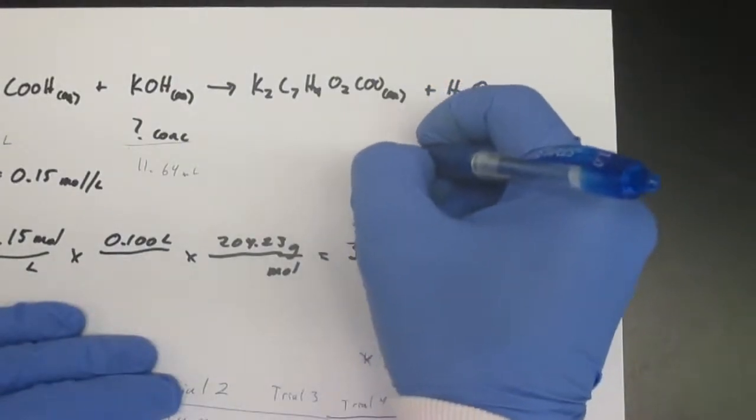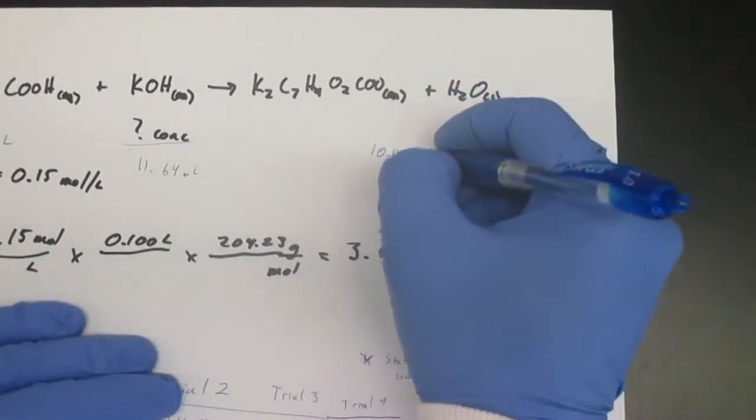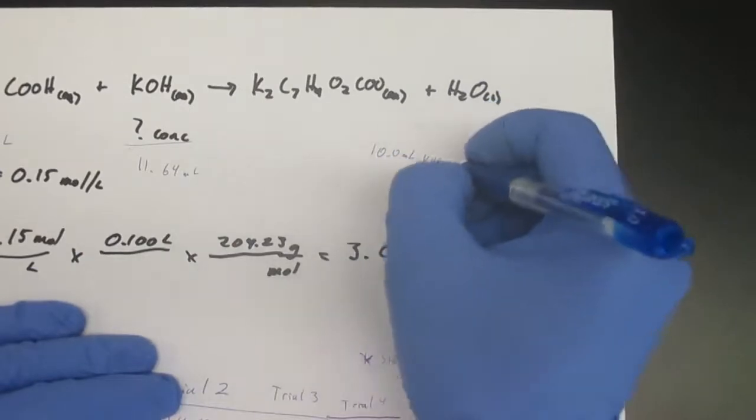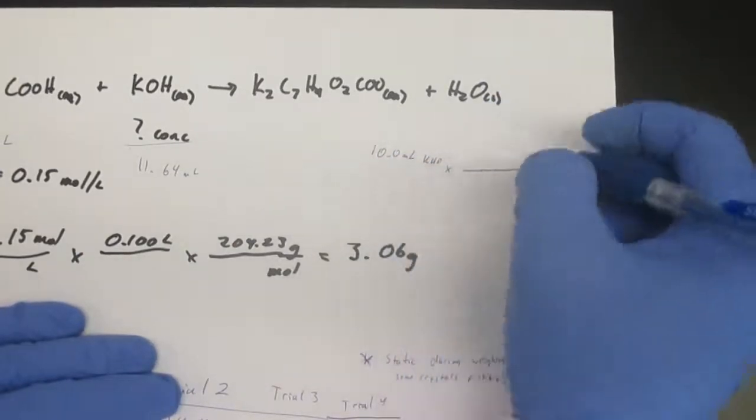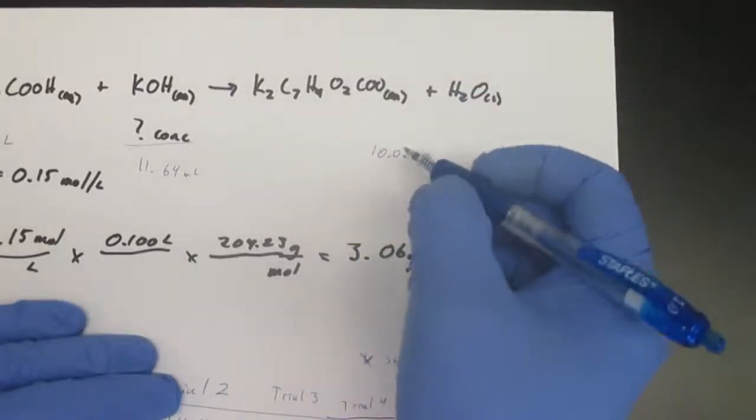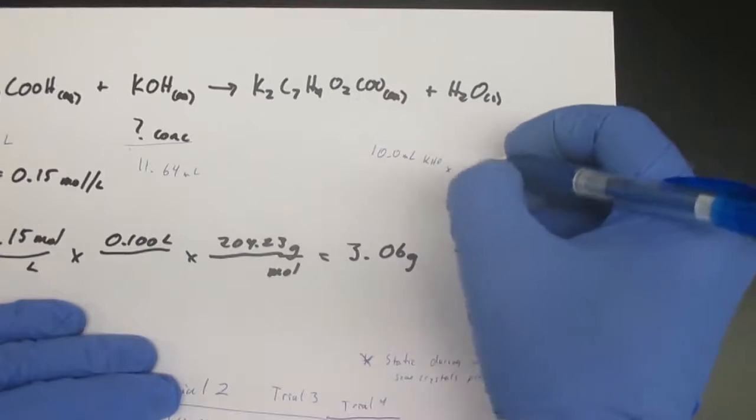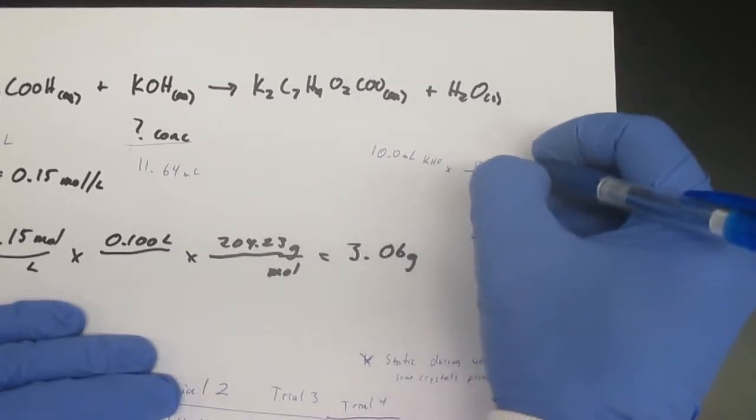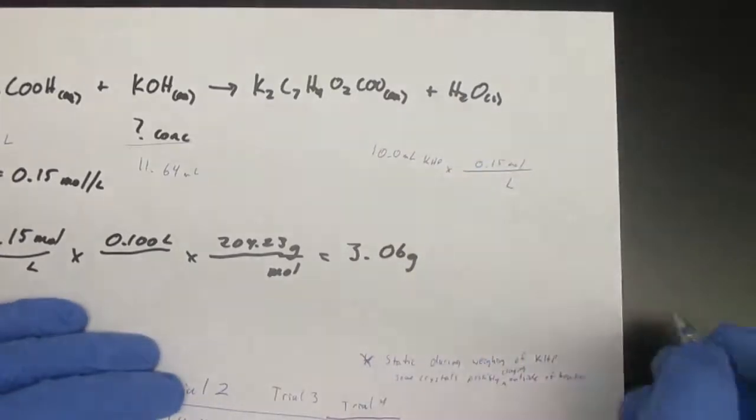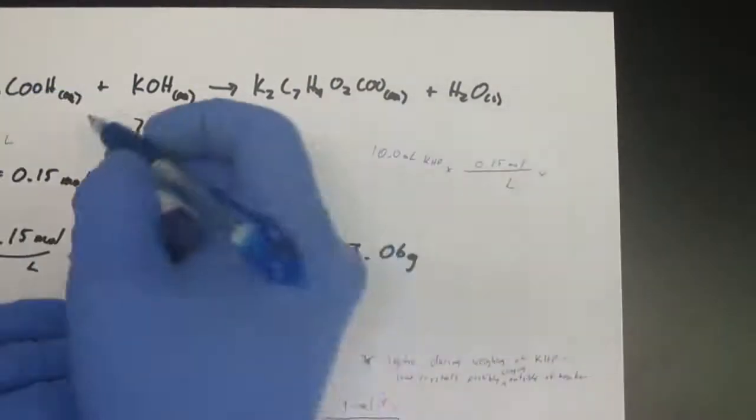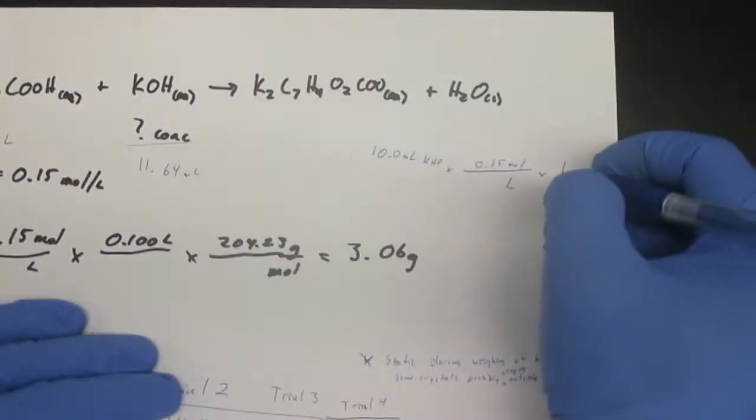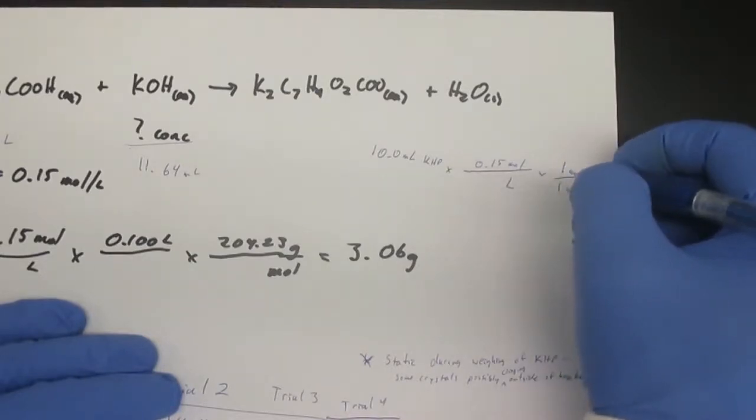We can say 10.0 milliliters of the KHP, and we're going to multiply that by the concentration. If you prefer to do 0.010 in liters, that's fine—0.15 moles in one liter. And the mole ratio in our balanced chemical equation is one to one, so that is moles of potassium hydroxide to moles of KHP.